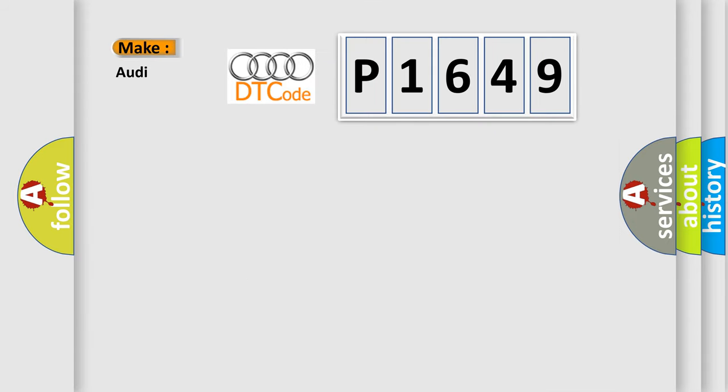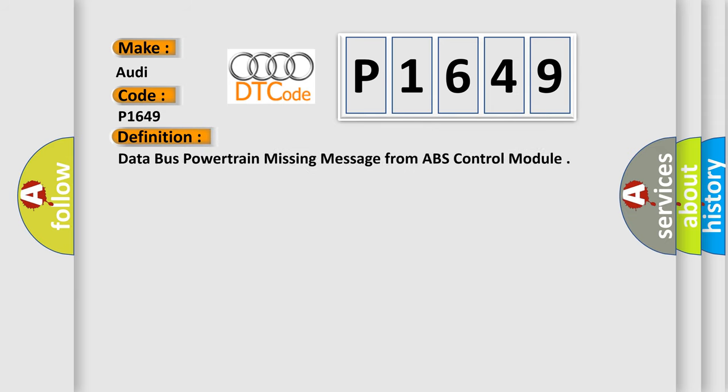What does the diagnostic trouble code P1649 interpret specifically for Audi? The basic definition is: data bus powertrain — missing message from ABS control module.